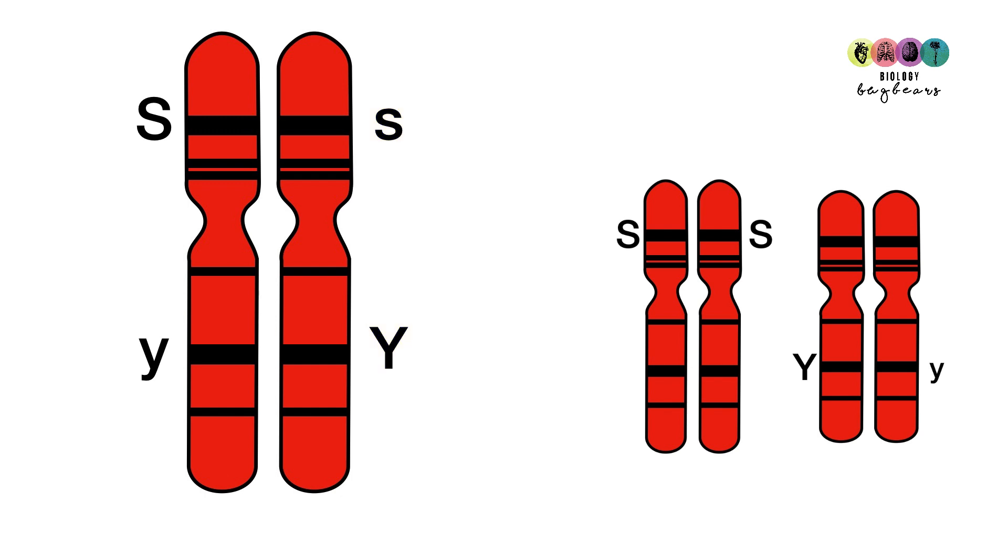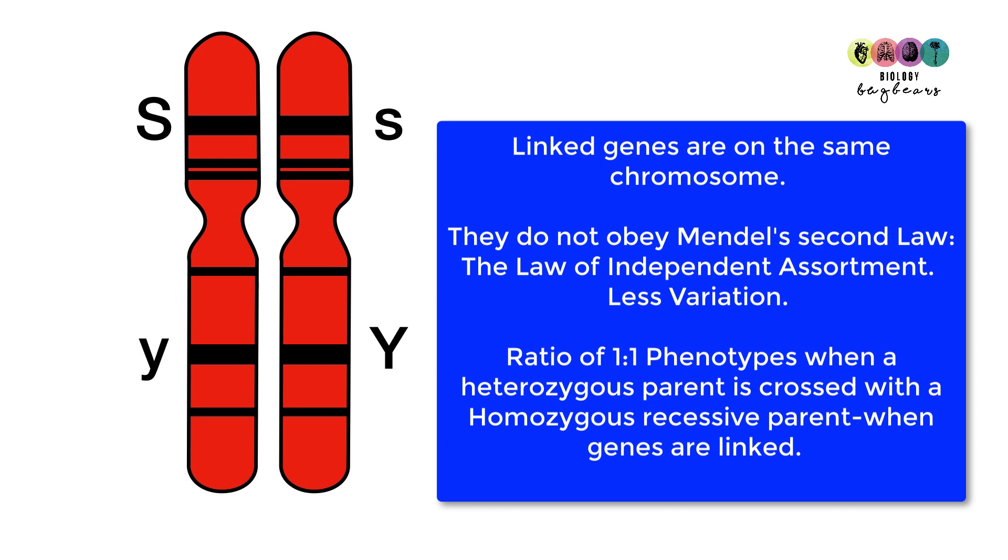So basically, if this organism with this genotype was to produce gametes, the dominant S would have to go with the small Y. They're linked together, and the same for the other one. So let's give a summary of linked genes.